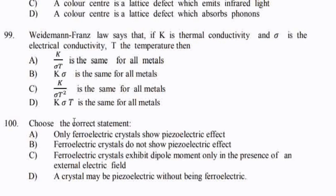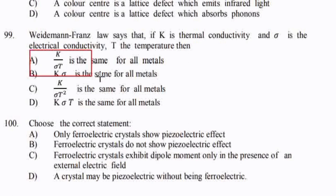The Wiedemann-Franz law states that if K is thermal conductivity, sigma is the electrical conductivity, and T is the temperature, then — option A — K divided by (sigma × T) is the same for all metals. This is a repeated question.